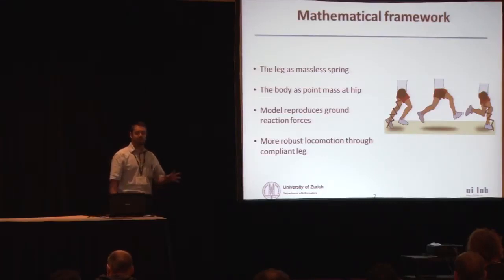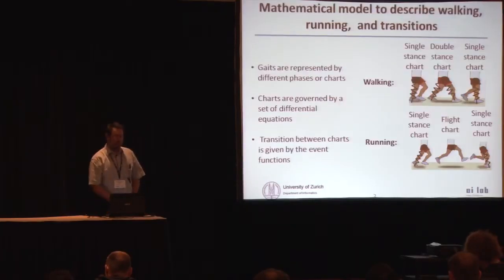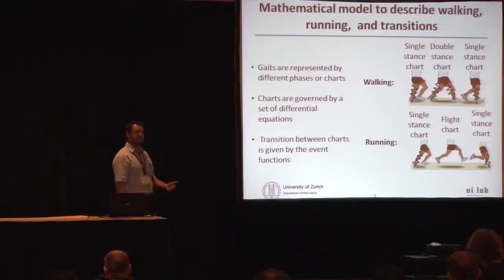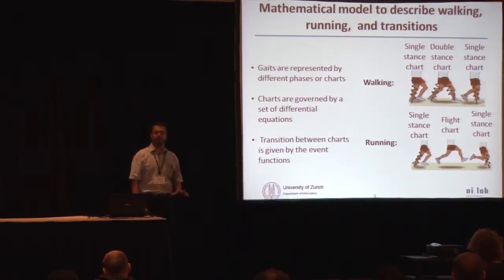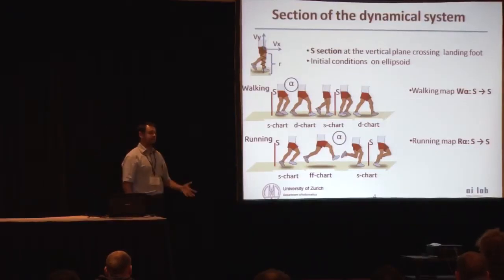So the SLIP model, you are assuming that all the mass is at the hip, you don't have masses of the legs, and the legs are just springs. I'm using this model because it reproduces the ground reaction forces in running and walking. You can represent walking and running with different phases. Walking is going to have one stance phase and one double stance phase, while running is going to have one stance phase and one flight phase. Both behaviors are sharing the single stance phase, and I'm going to use this one to study walking and running.